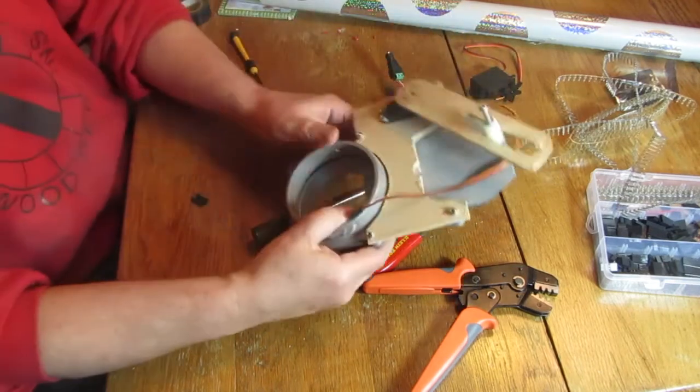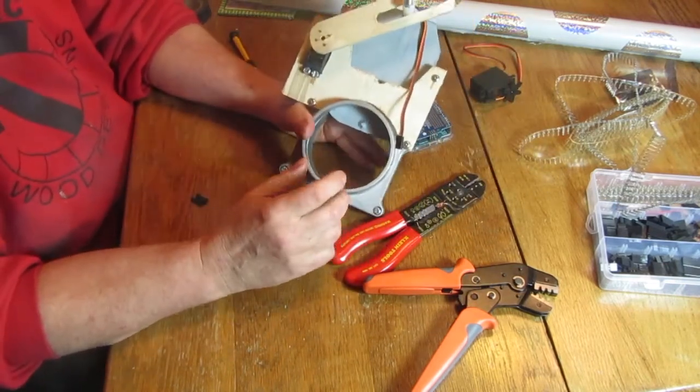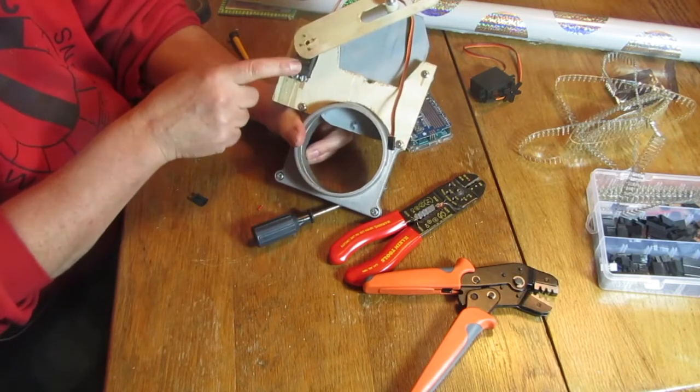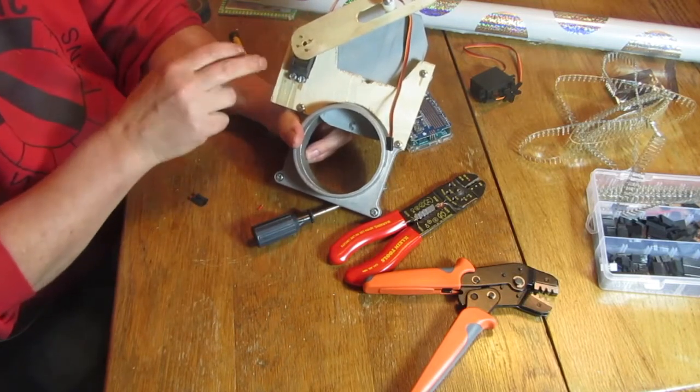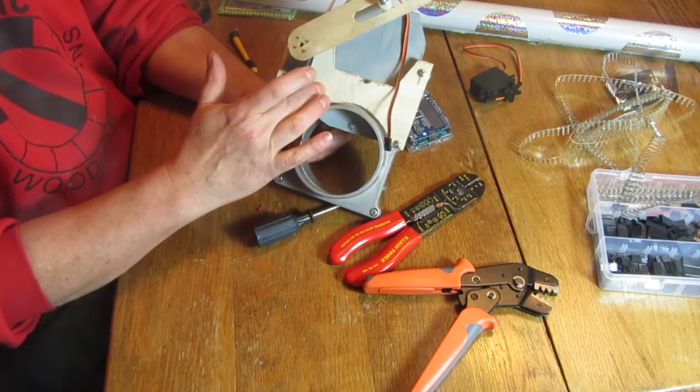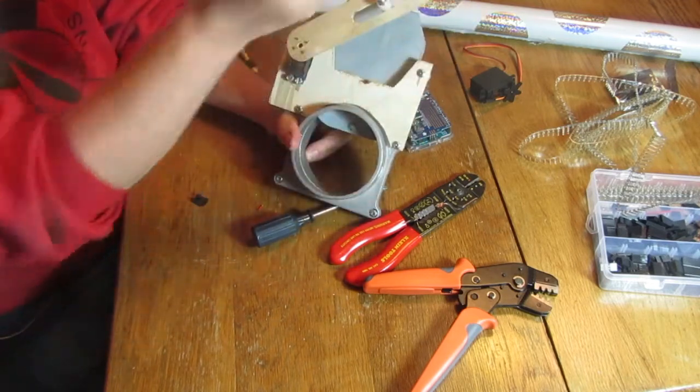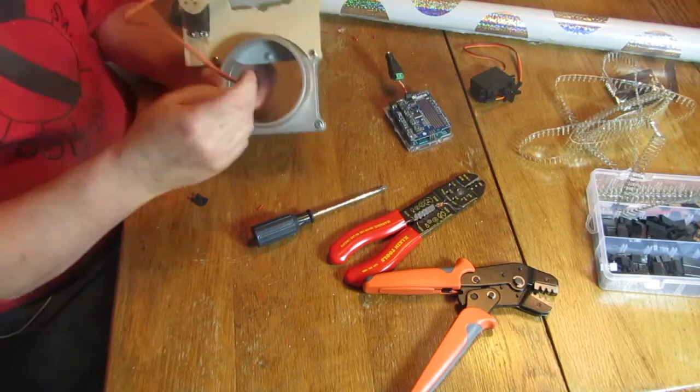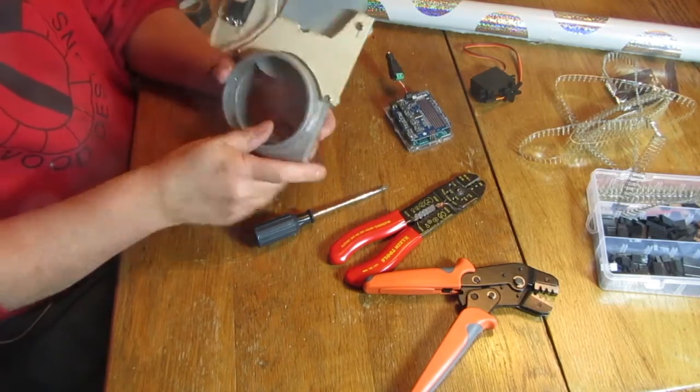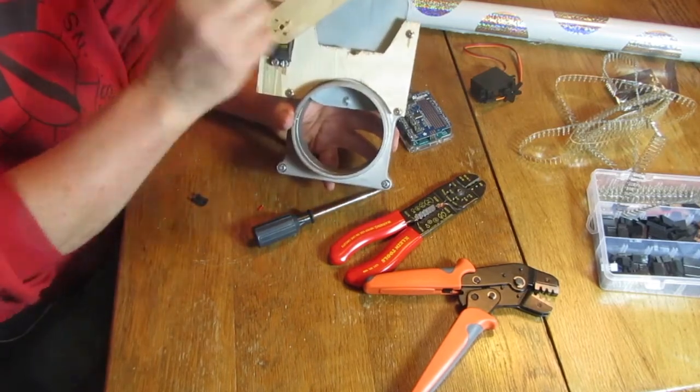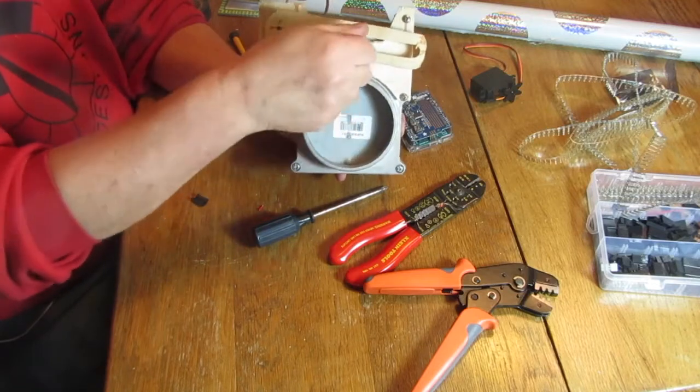I've got one servo motor for each of my blast gates. Here's my blast gate and here's the servo motor with a bracket put on it. This will connect to the shield to control the servo to tell it to open and close the blast gate.